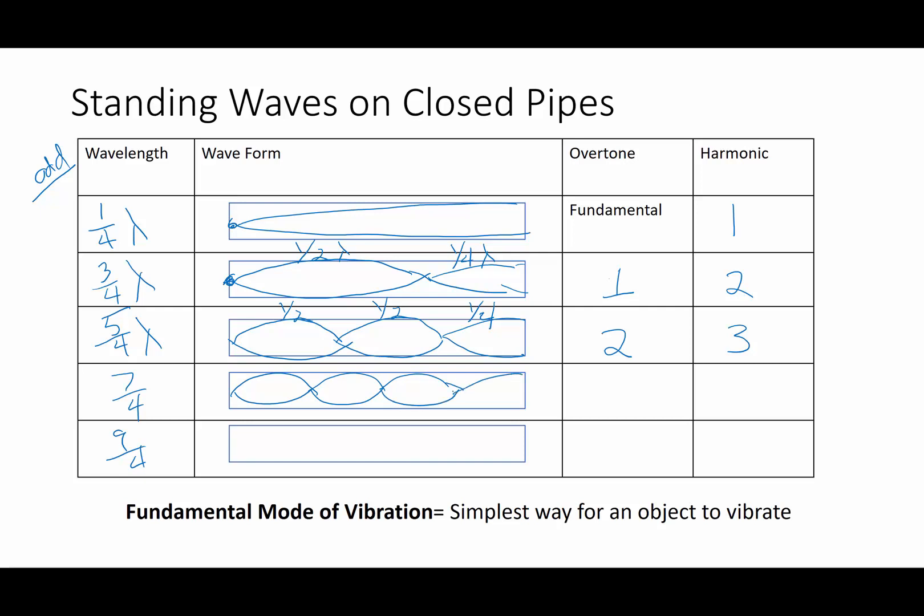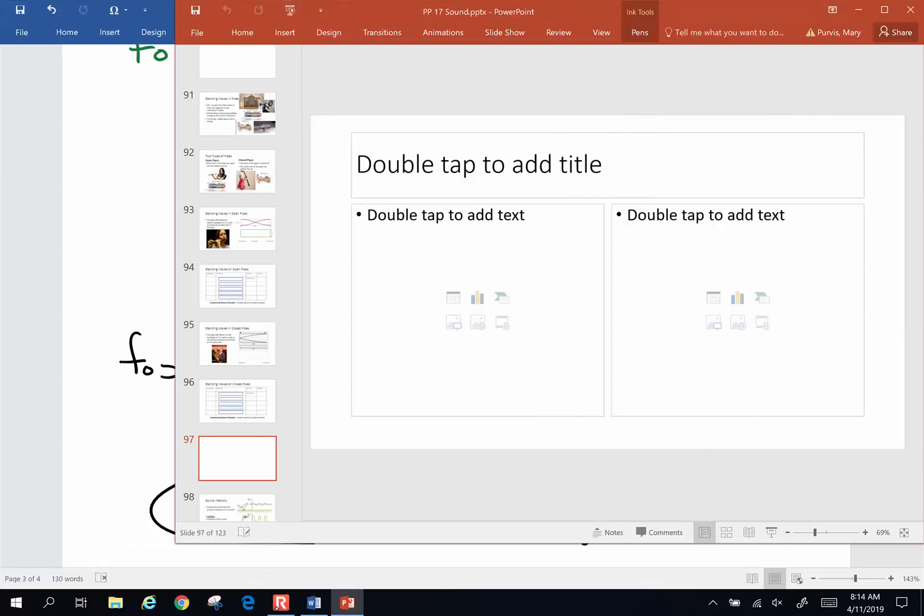Always make sure we have a quarter wavelength on the end. One, two, three, four, and yes, my drawings are not perfect. I apologize for that. And we go up third, fourth, and fifth harmonic. All right, that will do. Next video, we're going to come back, and we're going to do a couple example problems. So we'll see you then. Bye.